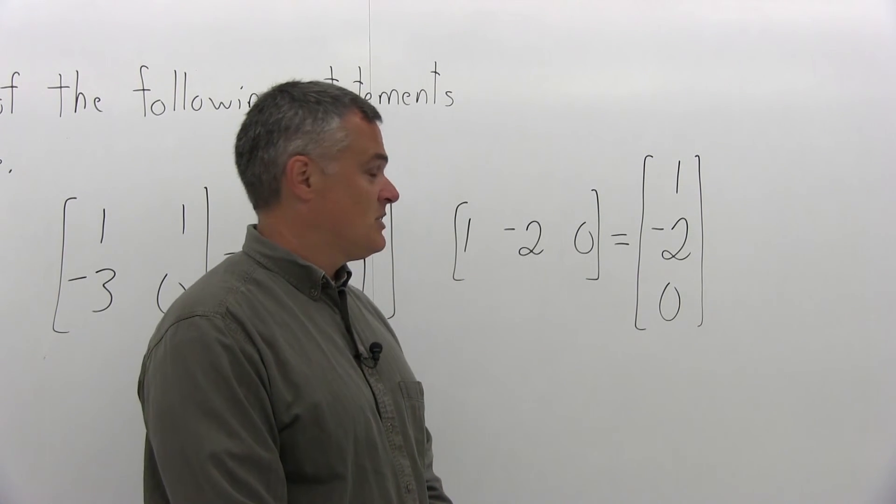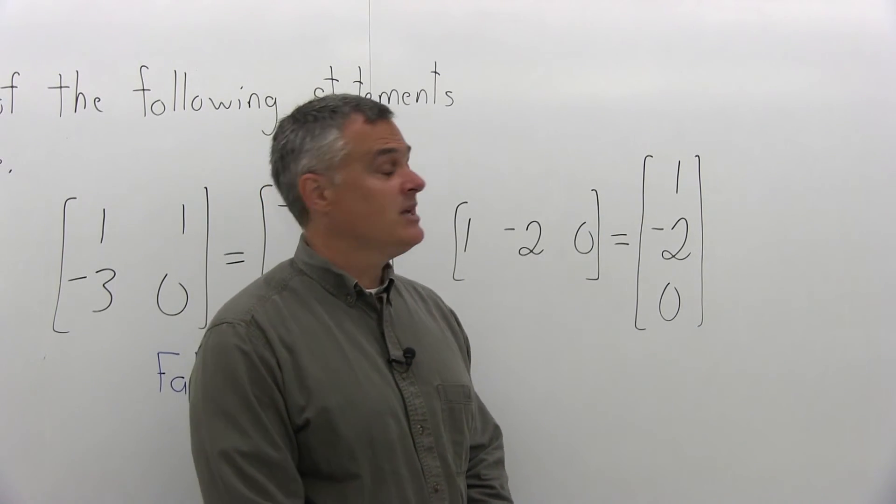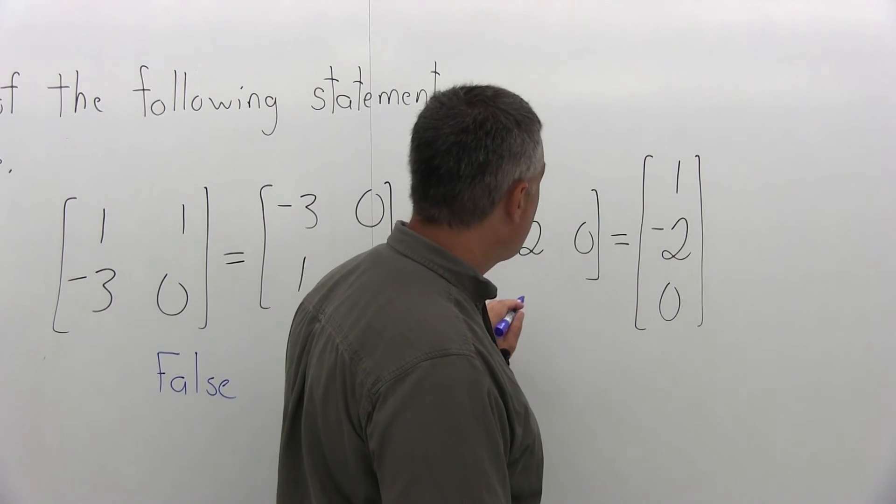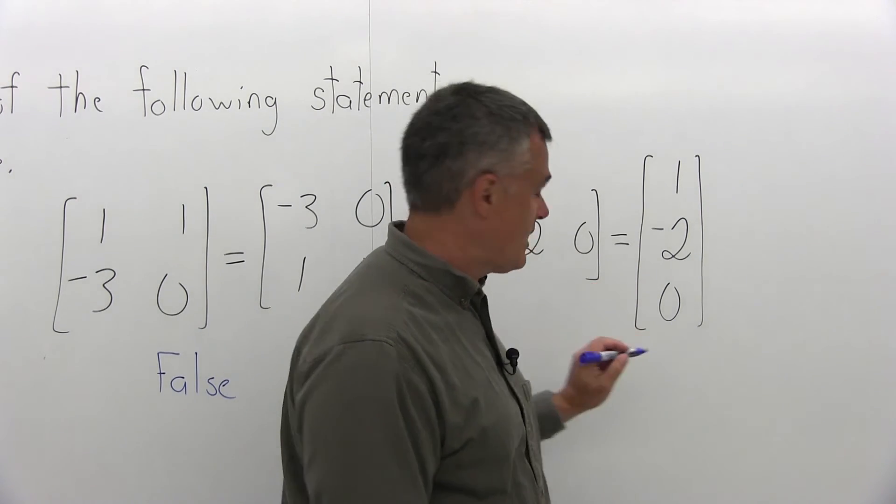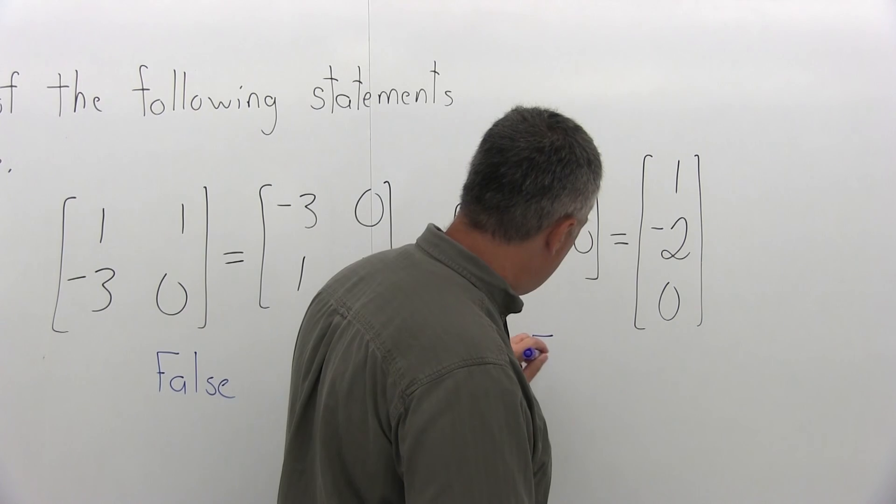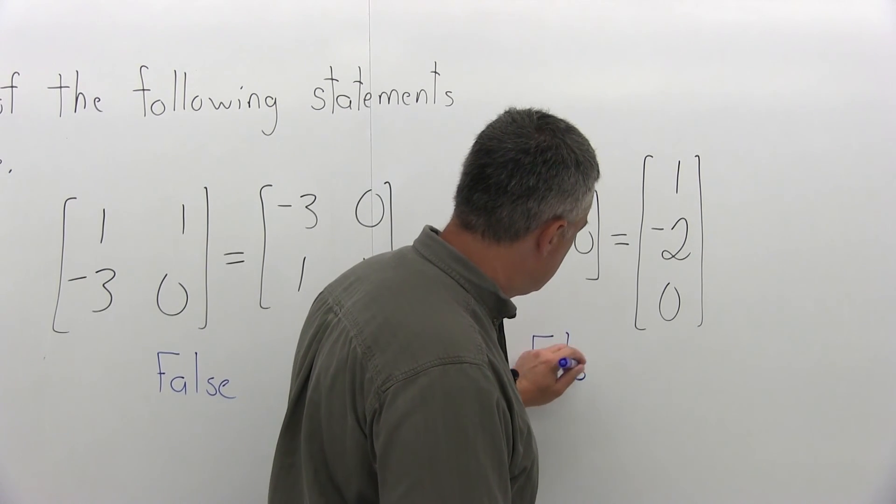These matrices would be transposed. One is transposed to the other, but they are not equal. So the statement that the left matrix is equal to the right matrix is also false.